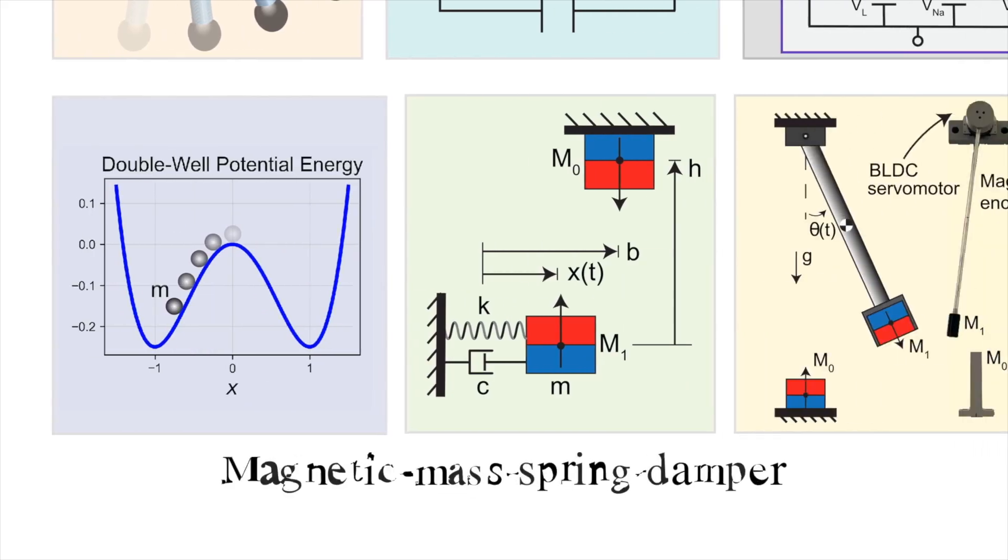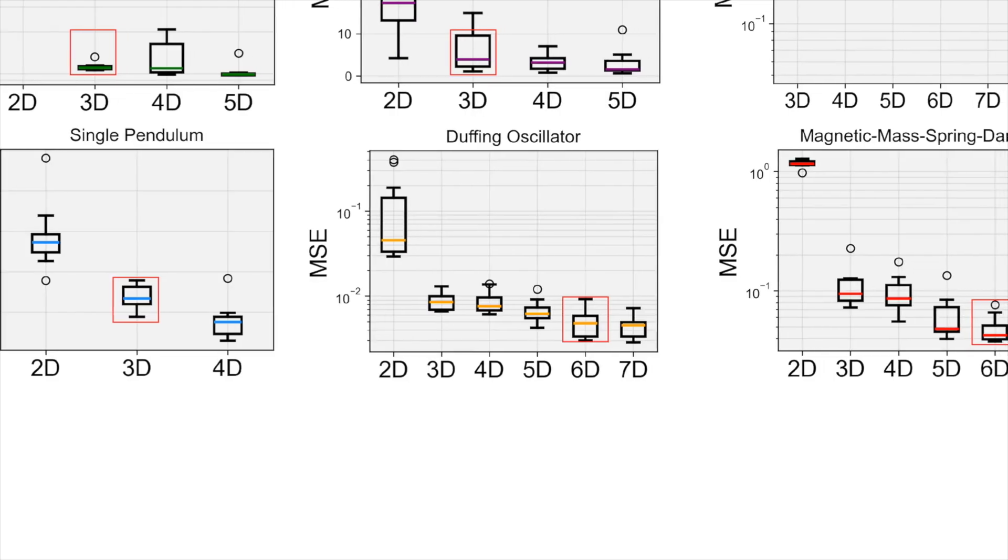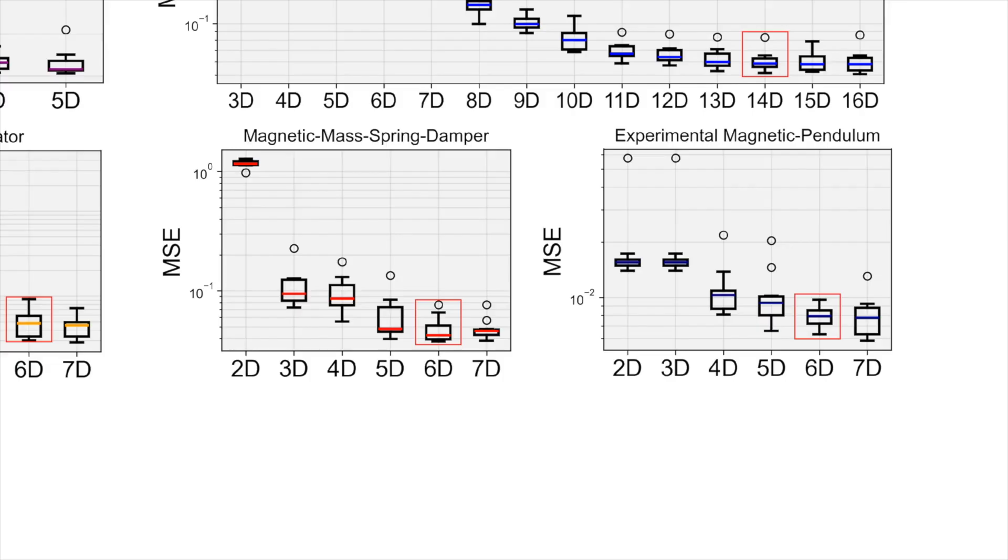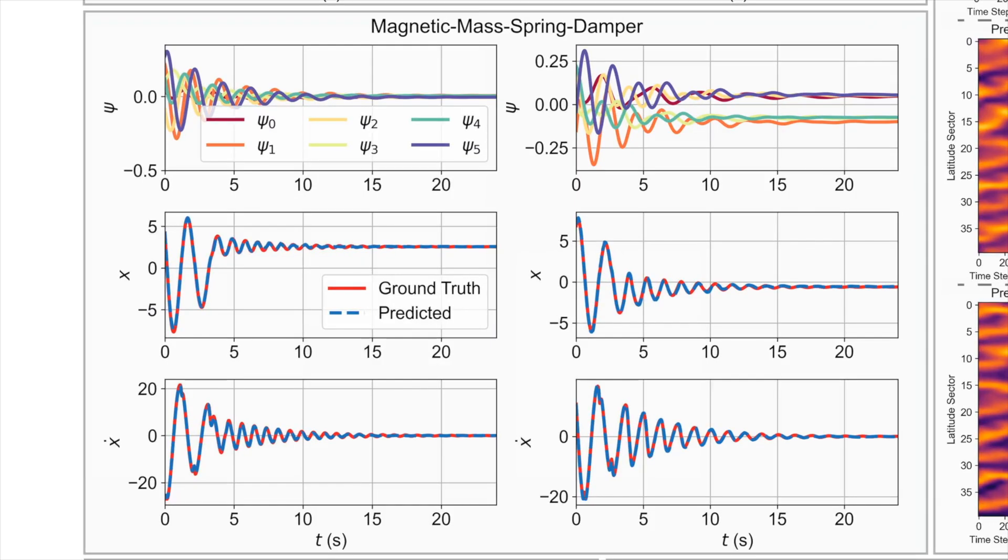We can extract the same structure from the much more nonlinear magnetic mass-spring damper system, while modeling its dynamics as a 6D linear system. This system has vastly asymmetric basins of attraction, making learning the dynamics a challenge.